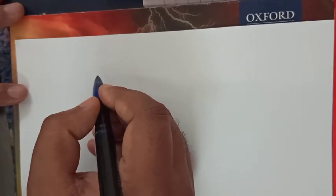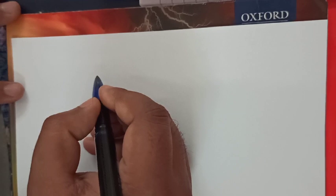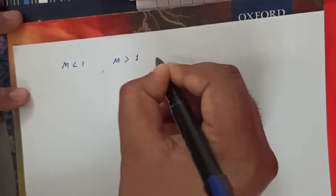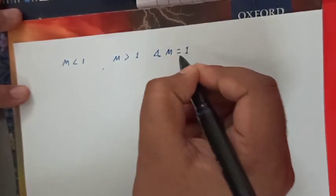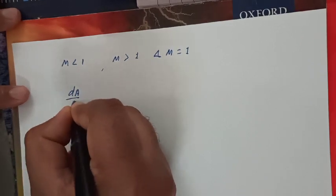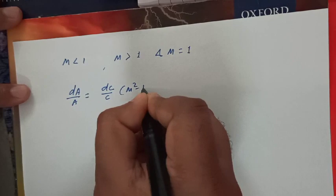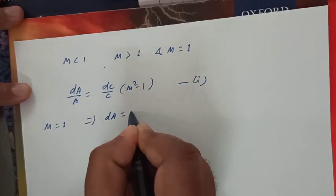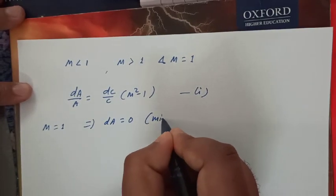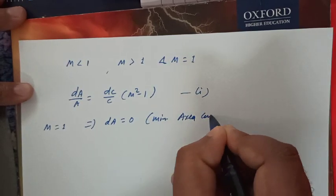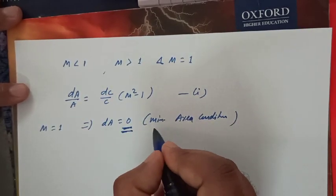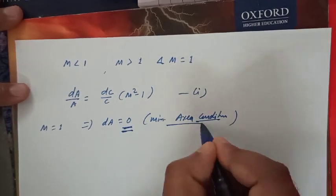In the last class, we have seen the importance of variation of flow parameter equation with area for different Mach numbers: M less than 1 for subsonic flow, M greater than 1 for supersonic flow, and M equal to 1. For M equal to 1, we have seen that dA/A = dC/C × (M² - 1). So for M equal to 1 here, dA is equal to 0, and this condition is the minimum area. Physically and mathematically, this area is the minimum area condition.